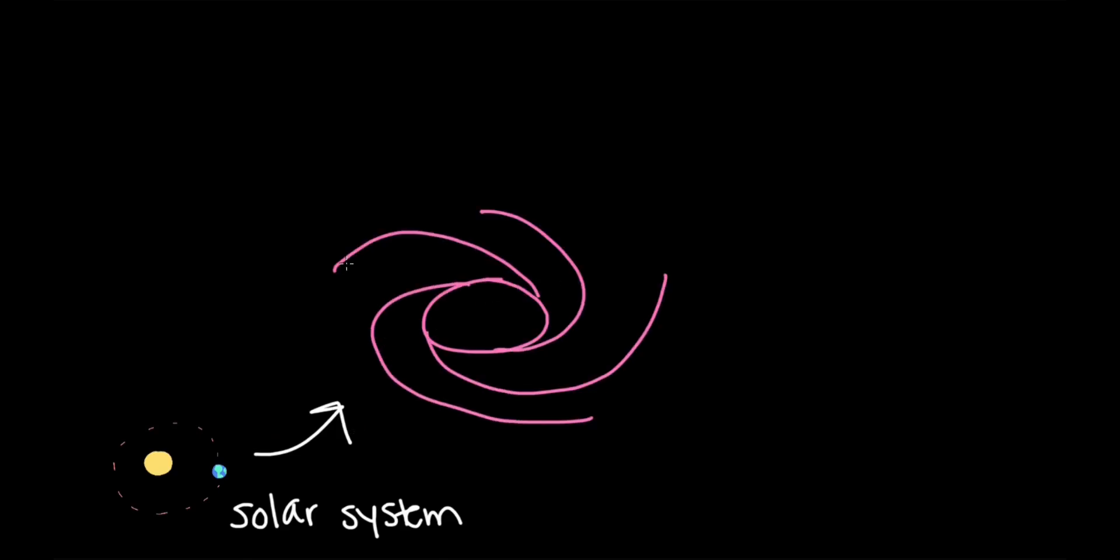Our solar system is just a small component of a much, much larger set of structures. The Sun is just one star of hundreds of billions of stars in our galaxy, which is called the Milky Way.